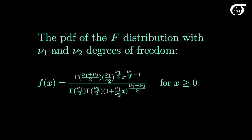Here's the probability density function of the F distribution, with the two parameters nu1 — the degrees of freedom in the numerator — and nu2, the degrees of freedom in the denominator. We're not going to be working with the PDF directly very often, but one thing to keep in mind is that the F random variable is a ratio of two non-negative quantities, and as such it will not take on negative values.